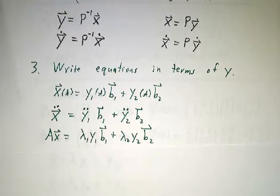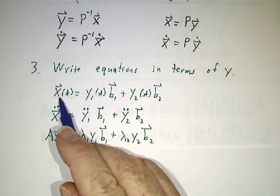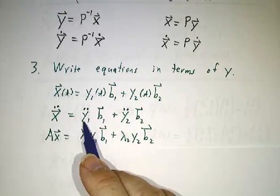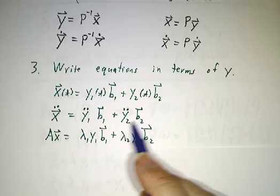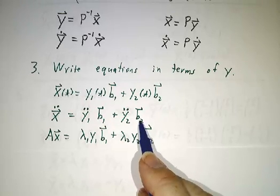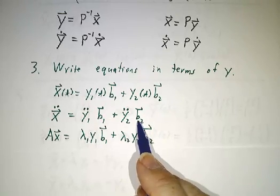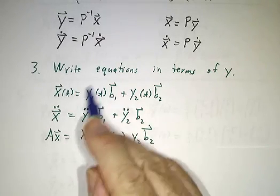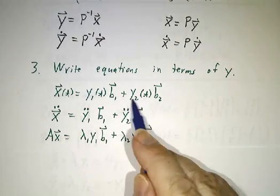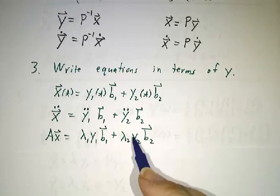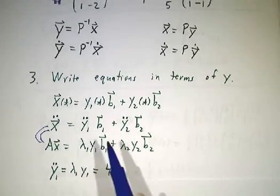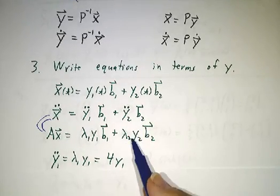Now we write out our equations in terms of y. It follows the same general pattern we've seen before. Since x is y1B1 plus y2B2, the second derivative of x is the second derivative of y1 times B1, plus the second derivative of y2 times B2, because B1 and B2 are just fixed vectors. And Ax, well these are eigenvectors, so multiplying the first term by A just gives you the eigenvalue λ1. The second term by A gives you the eigenvalue λ2. And the only way for these two things to be equal to each other is if y1 double dot is λ1y1 and y2 double dot is λ2y2.